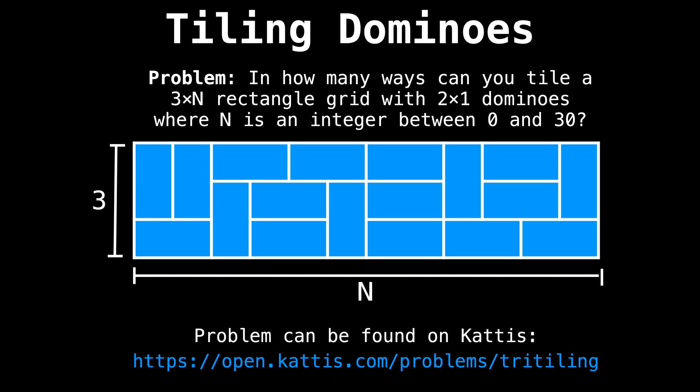The problem we are trying to tackle is very simple. It asks: in how many ways can you tile a three by n rectangle grid with two by one dominoes, where n is an integer between zero and 30. On this slide, you can see one particular tiling of how to tile a board with three rows and 12 columns. But as you can imagine, there are numerous distinct tilings to account for.